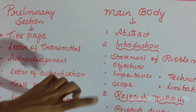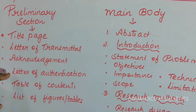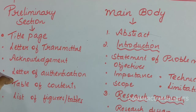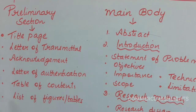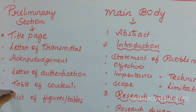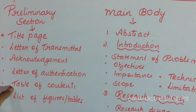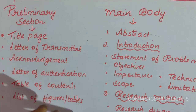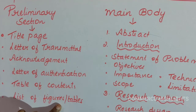The third page is the letter of authentication, also called letter of authorization — a letter which gives permission to a researcher to do research on a particular business problem. That letter should be attached in the preliminary section. Next, it should contain a table of contents listing what chapters and materials are included in the report, followed by a list of figures and tables showing what charts, figures, or tables are included.